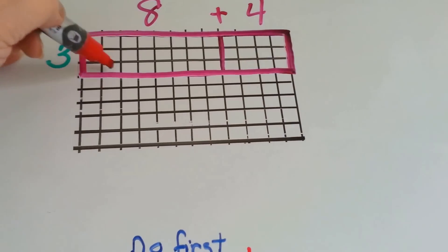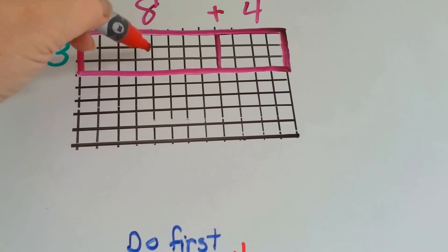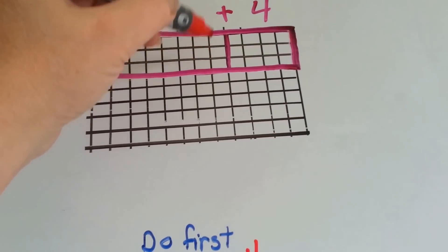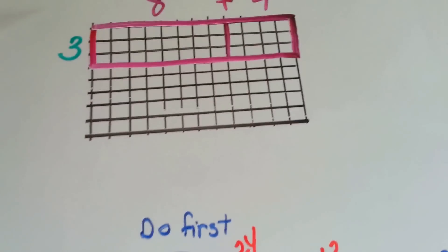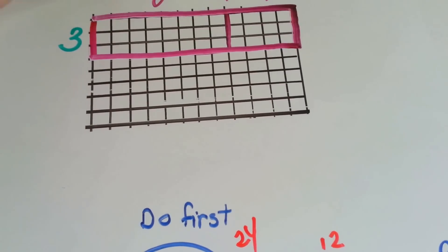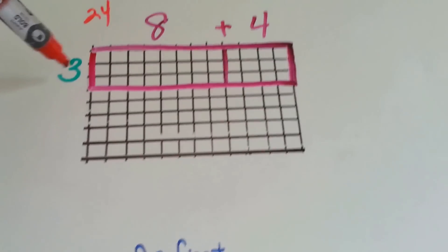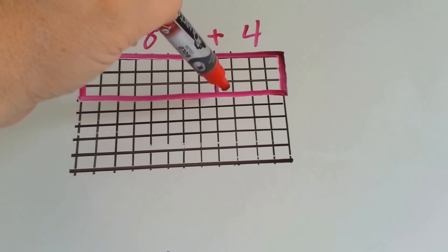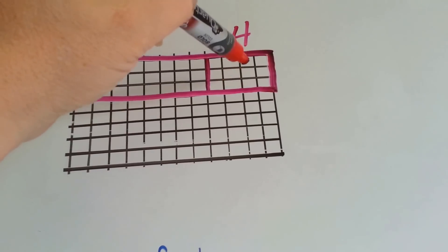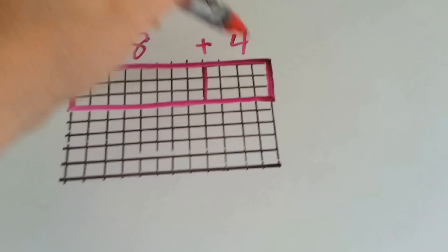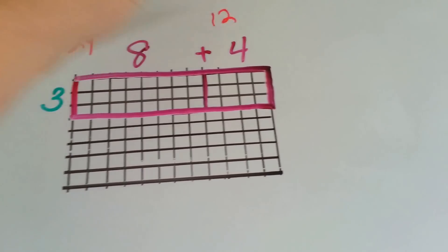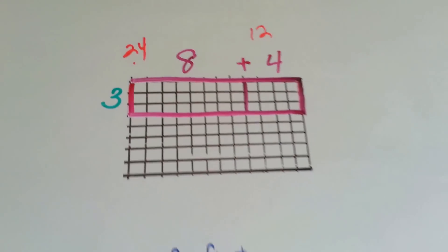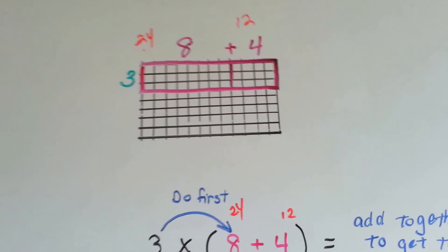3 times 8 is 24. And 3 times 4 is 12. You would add the 24 and 12 together and it would be the same thing as doing 3 times 12. It would still be 36.